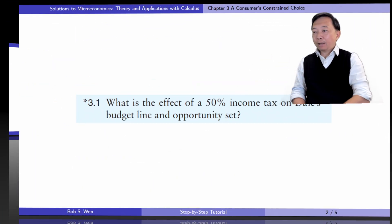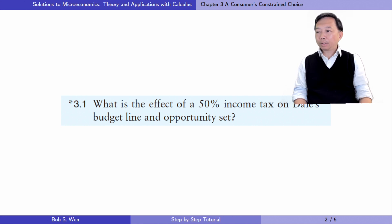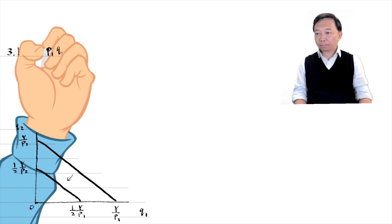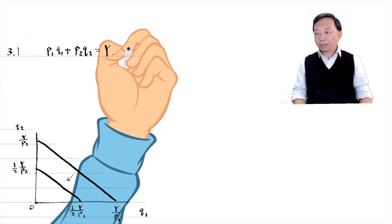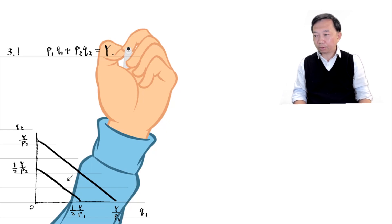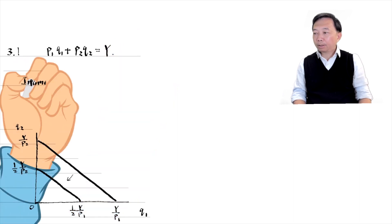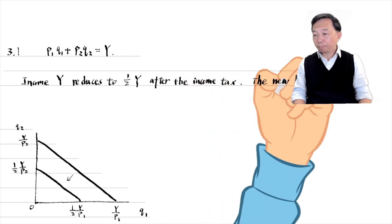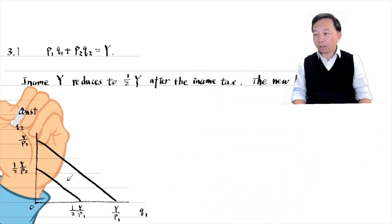Let's solve exercise 3.1. What is the effect of a 50% income tax on the consumer's budget line and opportunity set? In the first step, we write down the budget constraint — the bundle of goods that can be bought if a consumer's entire budget is spent on those goods at given prices. In the second step, we find the new budget constraint after the income tax.